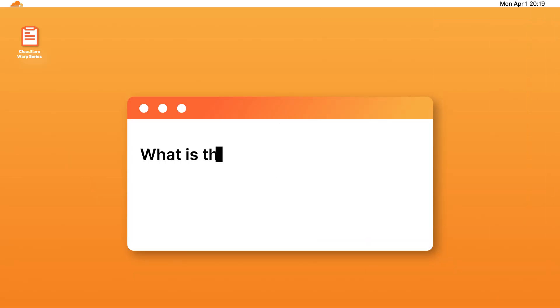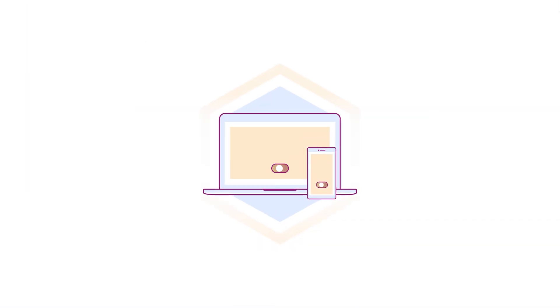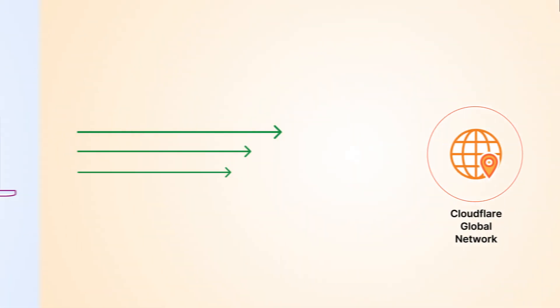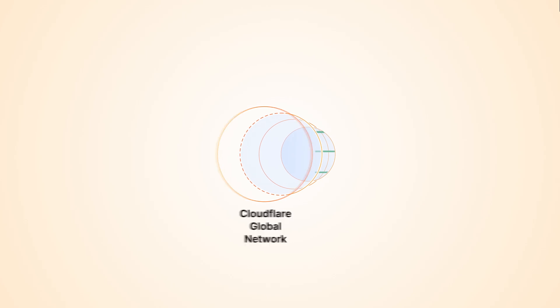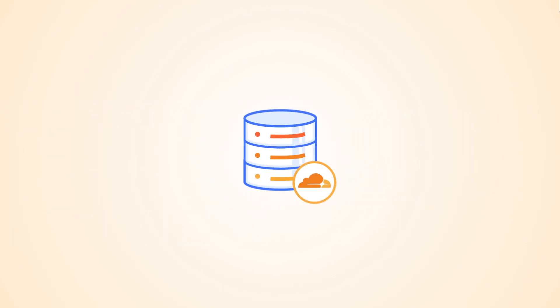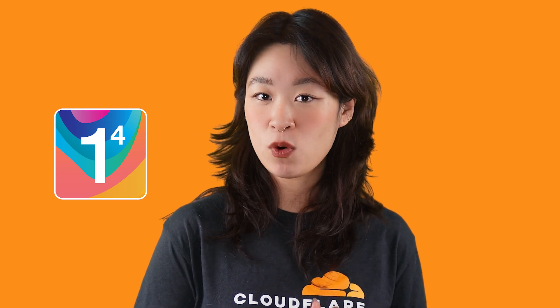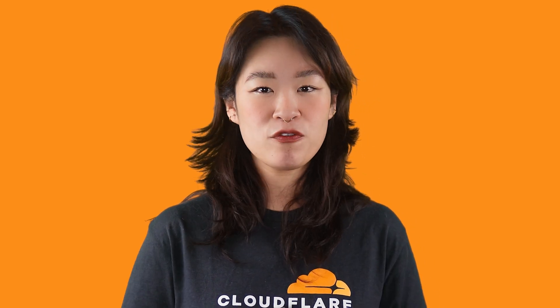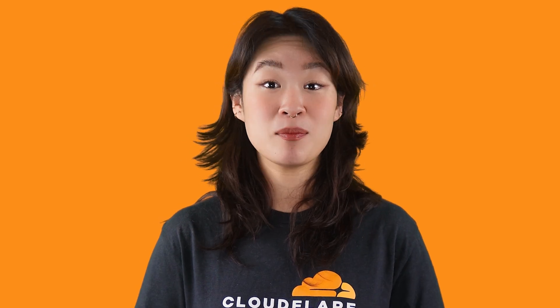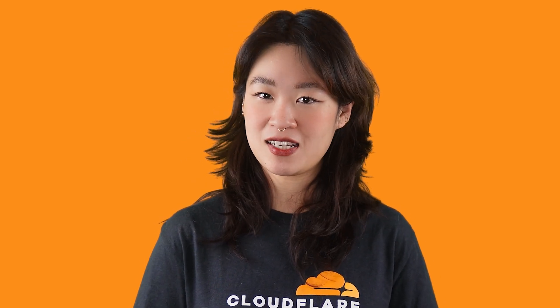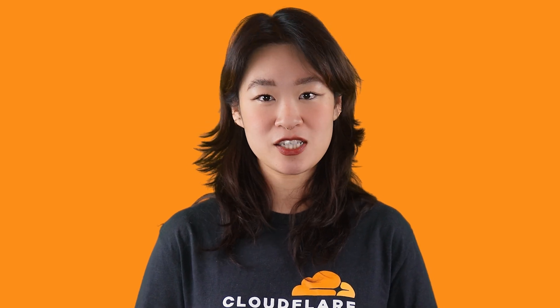Let's get started with what is the Cloudflare Warp client. Cloudflare Warp client allows you to protect corporate devices by securely and privately sending traffic from those devices to Cloudflare's global network, where Cloudflare Gateway can apply advanced web filtering. The consumer version of Warp, or the app 1.1.1.1, is available to the public for free. The corporate version integrates with Cloudflare Zero Trust, giving your IT team the ability to manage security policies, control traffic routing, and monitor usage.